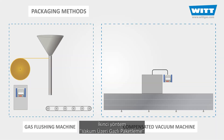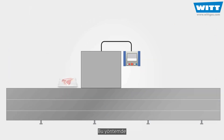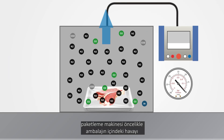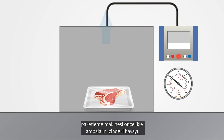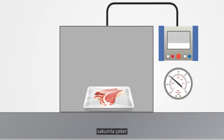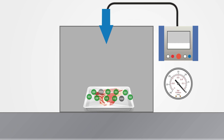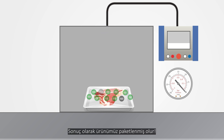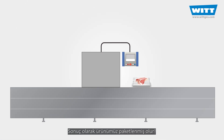The second method is called compensated vacuum. In this method, the machine first removes the air inside by pulling a vacuum within the package, and then breaks the vacuum with the desired gas mixture. Finally, we have our food packed.